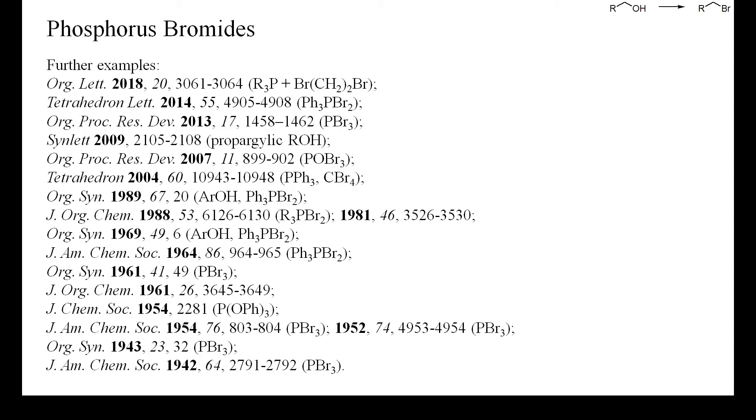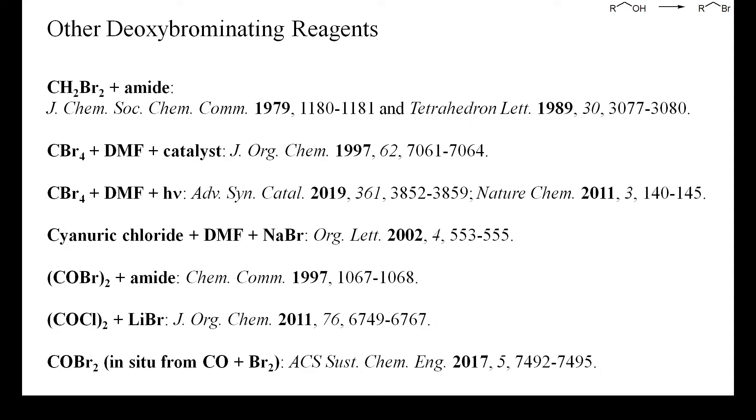Unfortunately, the brominated analogues of phosphine and thionyl chloride are more difficult to prepare and less readily available. Therefore, fewer examples of the use of these reagents in deoxybrominations have been reported.